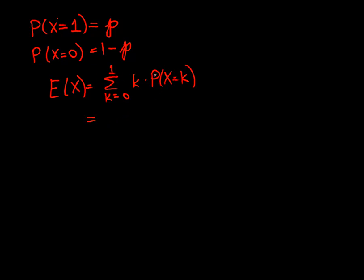Here we just have two terms because there's two possible values. If K is 0, then that term is 0. Just for completeness, I'll put in the other factor, even though it doesn't matter because we're multiplying by 0. Then you add K equals 1 times the probability that K is 1, which is P.